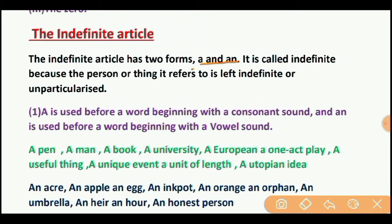Then we see the uses of the indefinite article A or AN. A is used before a word beginning with a consonant sound, and AN is used before a word beginning with a vowel sound. Examples of A: a pen, a man, a book, a university, a European, a one-act play, a useful thing, a unique event, a unit of length.